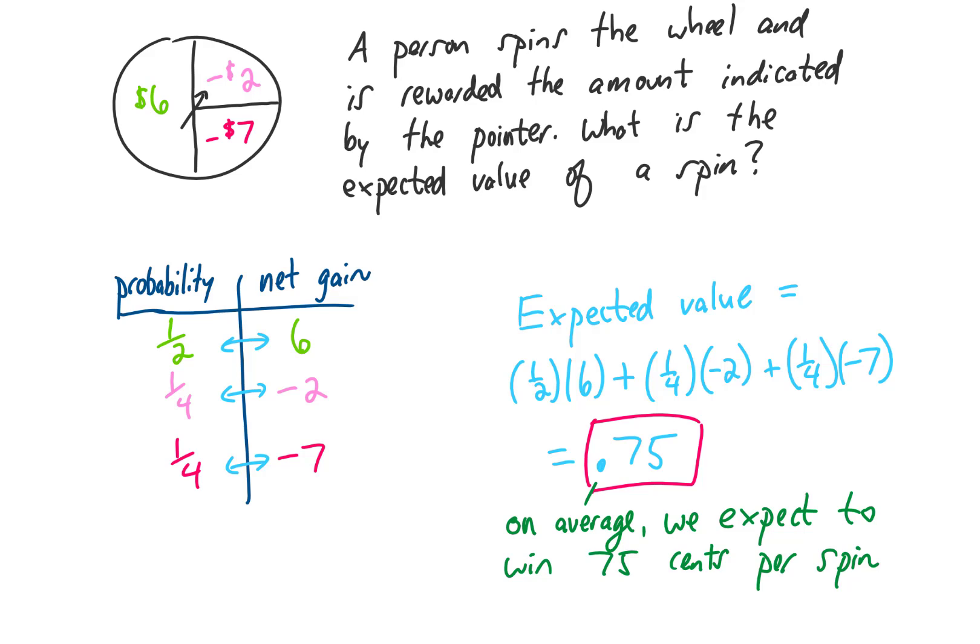Obviously, on any given spin, you will never win exactly $0.75. But if you spin this thing a whole bunch of times, on average, that's our expectation.